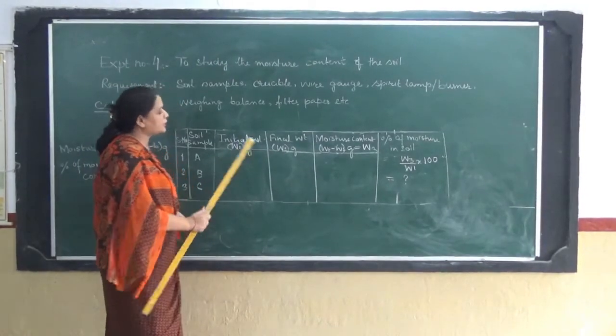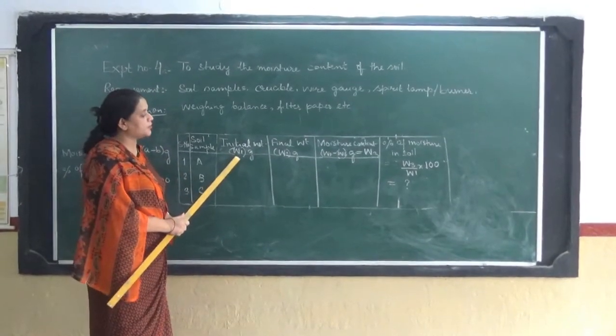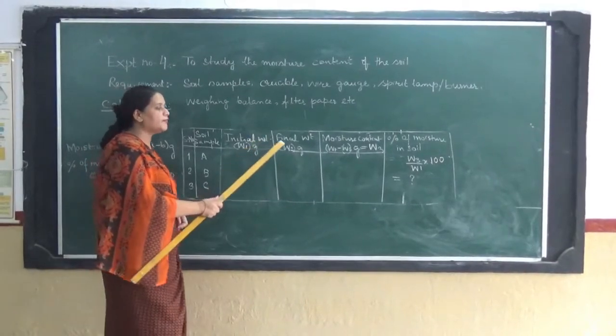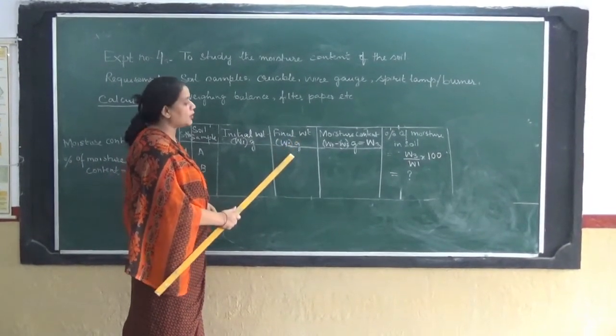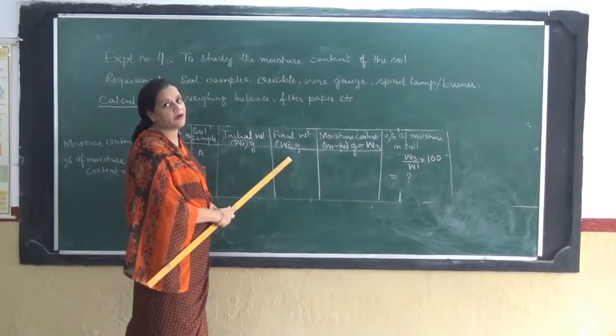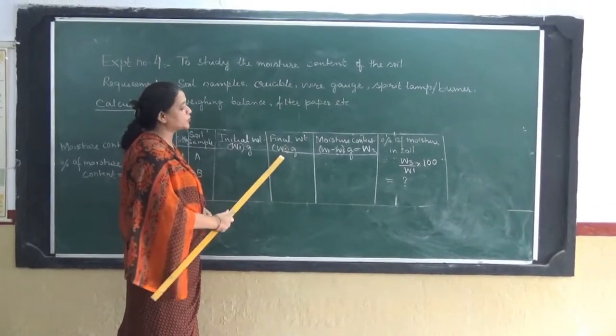We have to heat this soil sample in a crucible and we have to note the final weight after all the moisture of the soil has been evaporated. That will be denoted by W2.